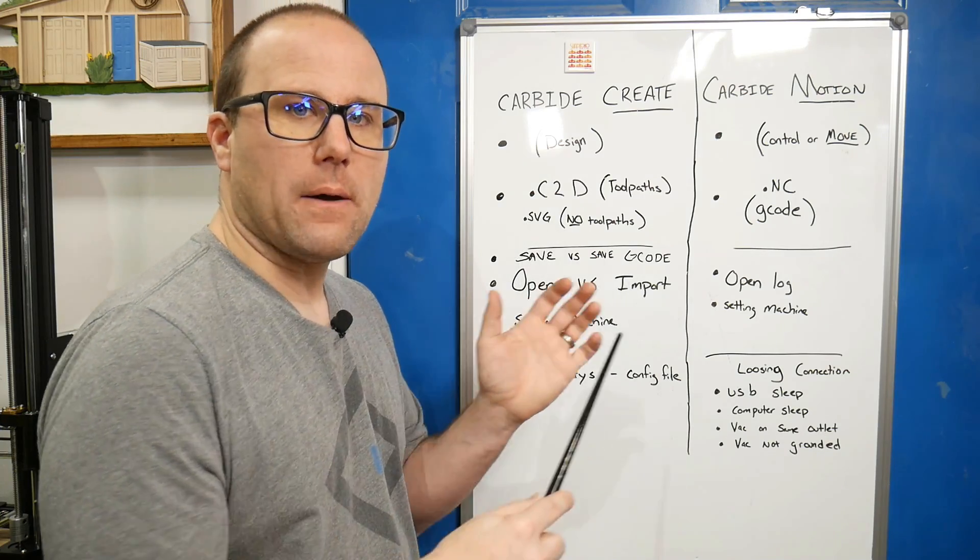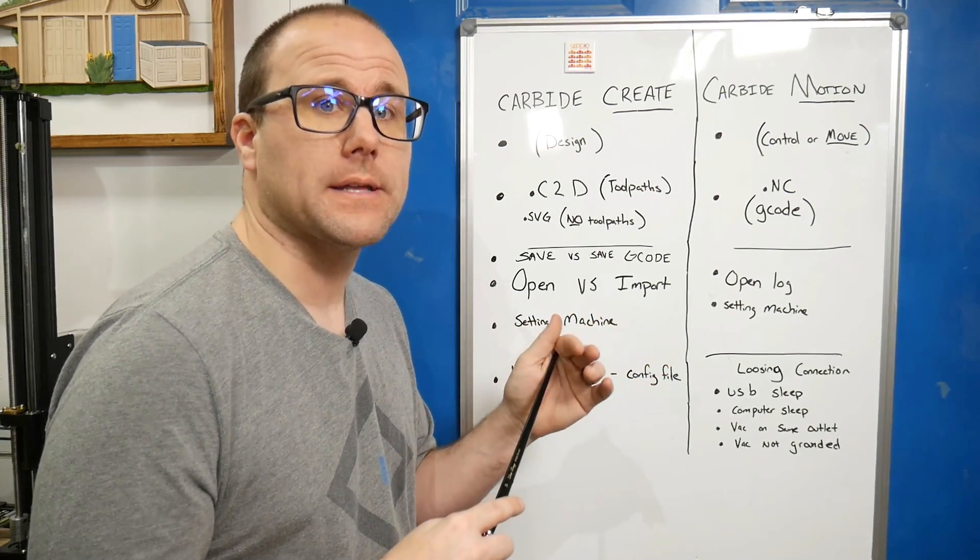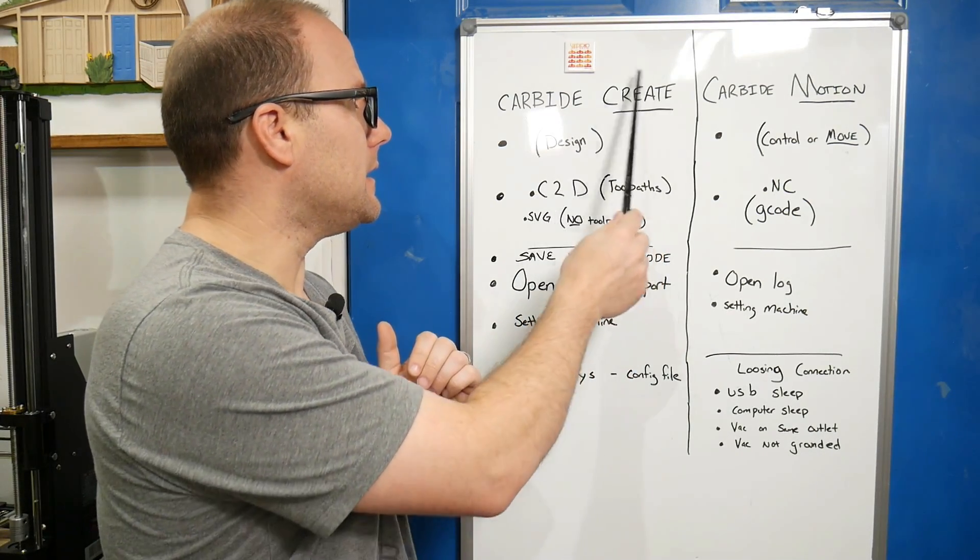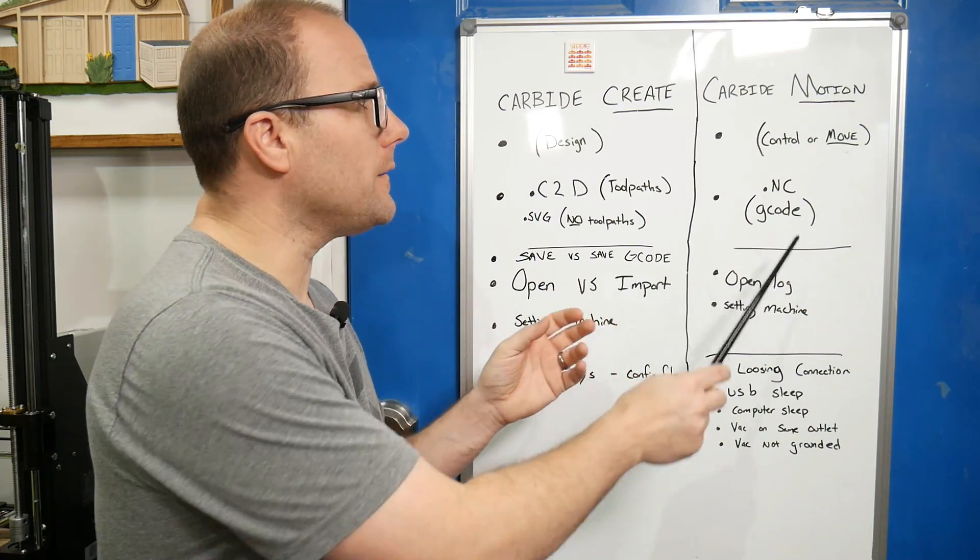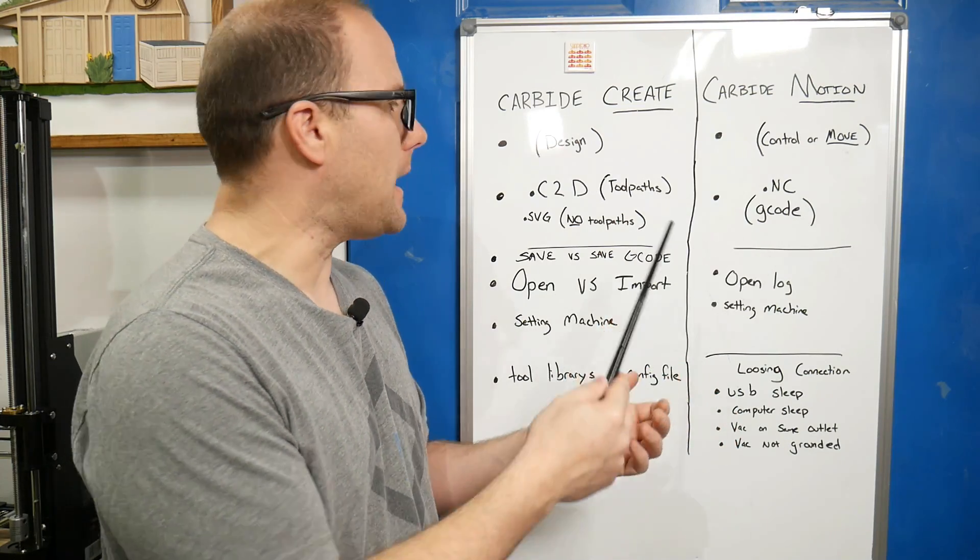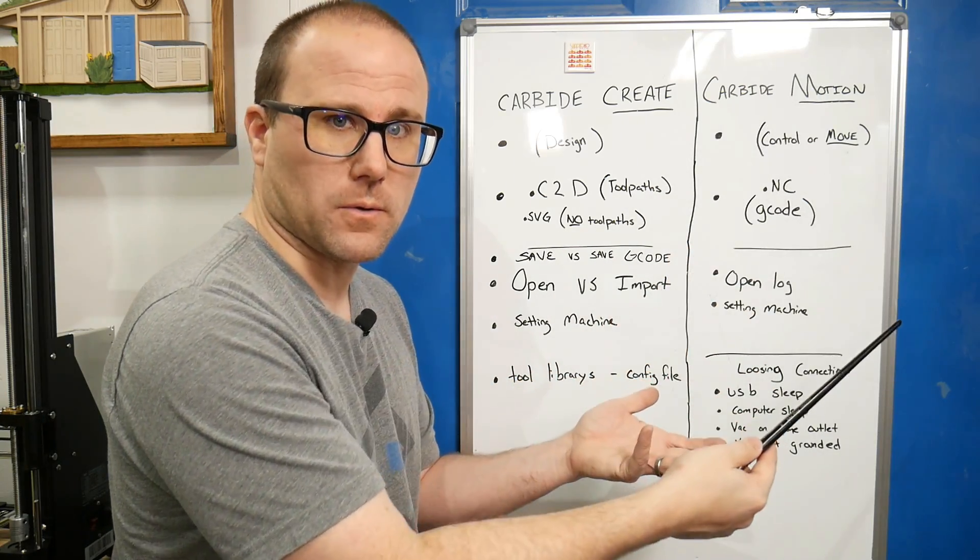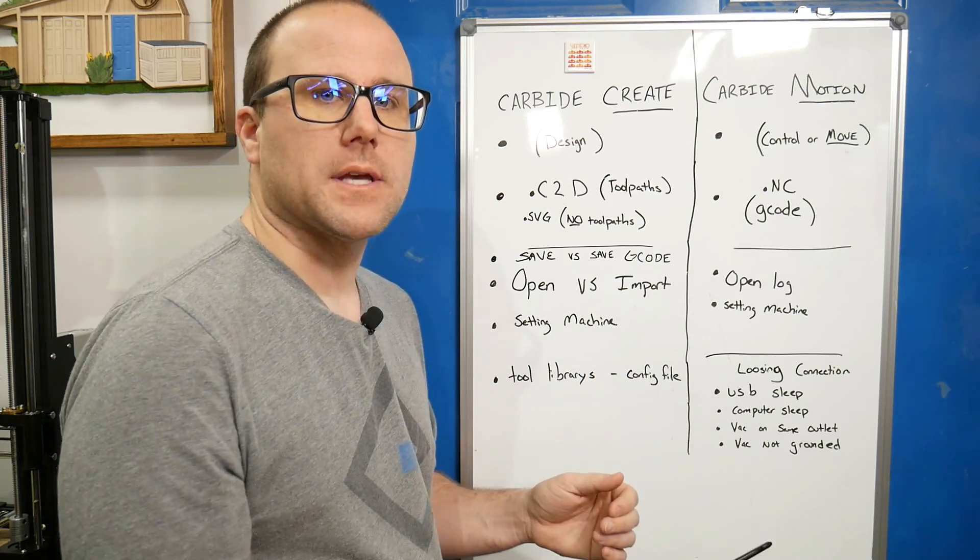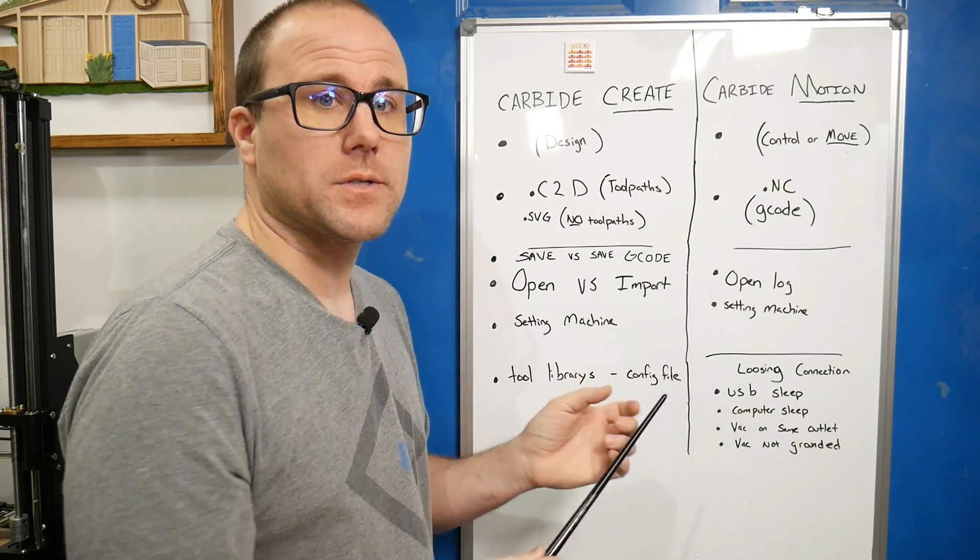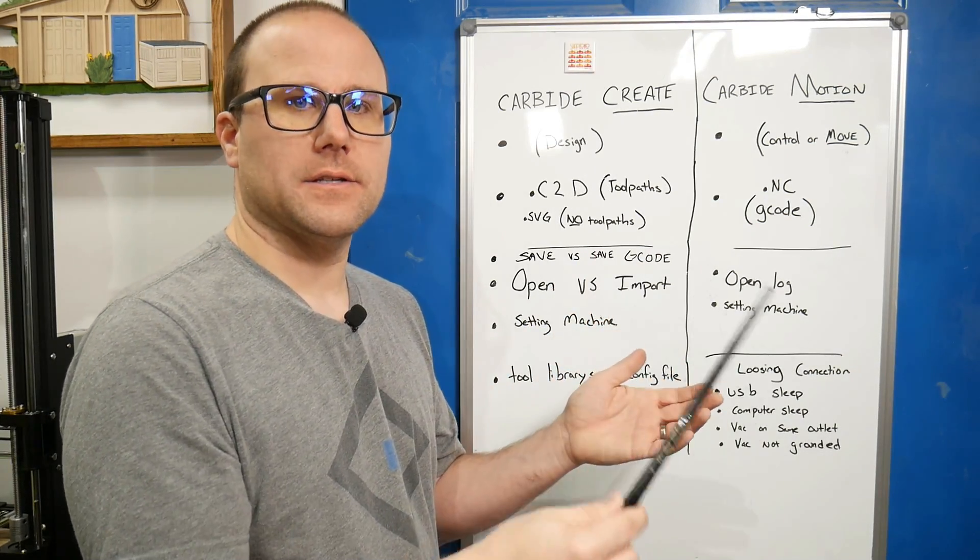The svg will have the design but not the tool paths, so you'll have to create them yourselves. That .c2d will not open in Carbide Motion. If you try to open it in the motion controller, it will say bad code in the g-code, bad characters. That's because it's not a Carbide Motion file. It is not a g-code file. We have to save what we open over here separately as a g-code file.